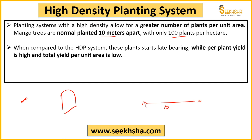The number increases quite a lot compared to normal planting. In normal planting, fruits are also late bearing. Per plant yield is high in normal planting — that is, the 10-meter-apart planting — per plant production is higher compared to high density planting. But the total yield, meaning total production of the entire land, will be less in normal planting.